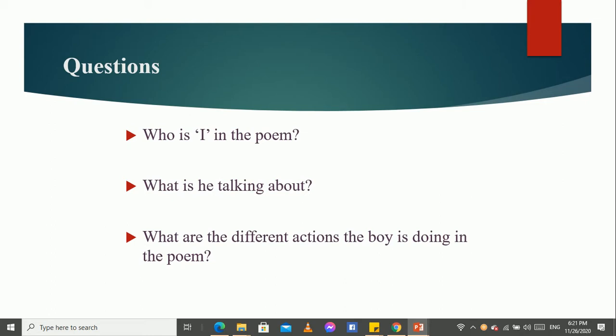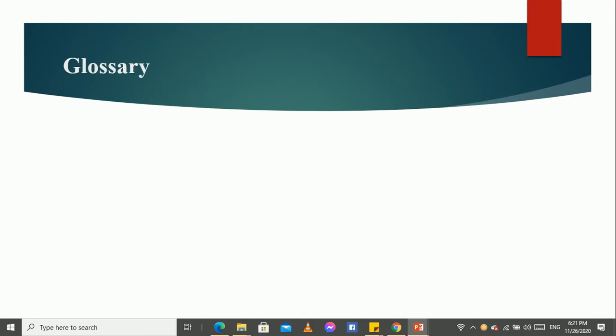He is talking about our shadow. What are the different actions the boy is doing in the poem? Children, can you give the answer to this question? Yes, you are absolutely correct. The boy is jumping, dancing with his shadow.